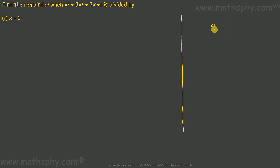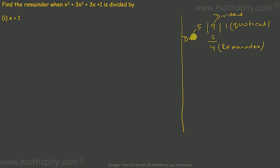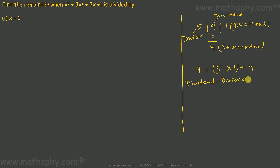Suppose I have 9 and I divide this by 5. The quotient is 1, the remainder is 4, 9 is the dividend, and 5 is the divisor. I can write this as: 9 = 5 × 1 + 4. So dividend equals divisor into quotient plus remainder. Simple concept.